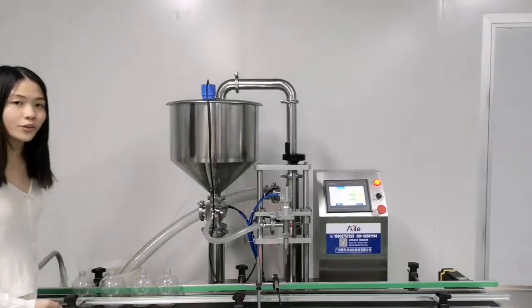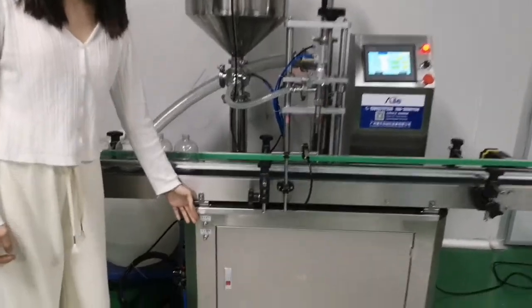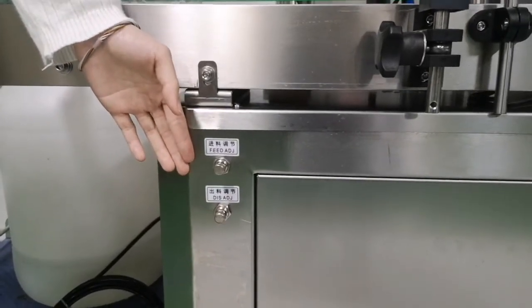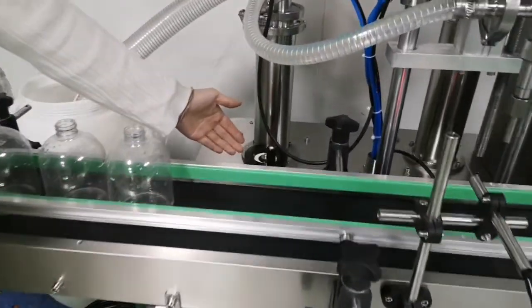We equip it with a 2 meter conveyor belt. This part can adjust the filling pressure and material feeding pressure. And this part we can adjust the filling capacity.